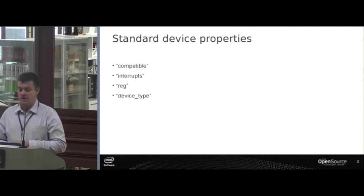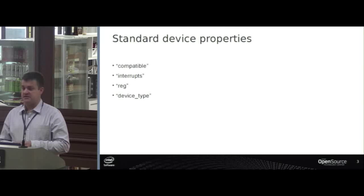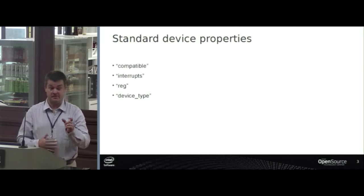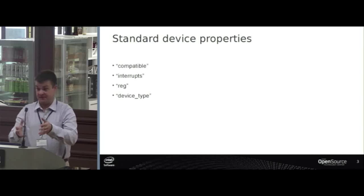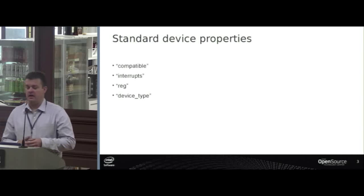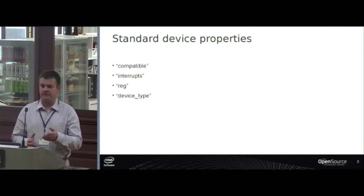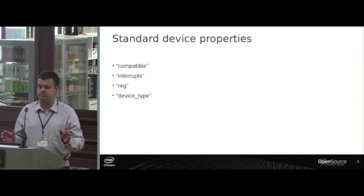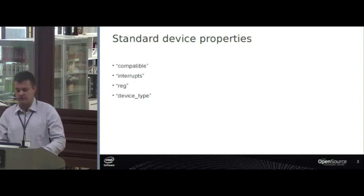For example, it is a serial port. But we don't really use device type because there is a specific compatible property that tells us specifically what serial port it is. And if you have a driver for that which isn't aware that this is a serial port, then it's probably not a very good driver in the first place.